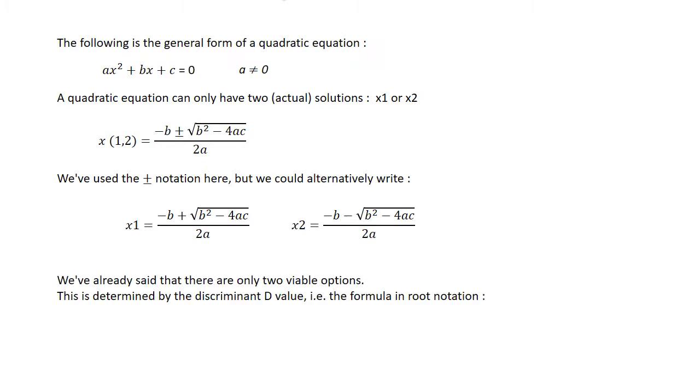We've already said that there are only two viable options. This is determined by the discriminant D value.